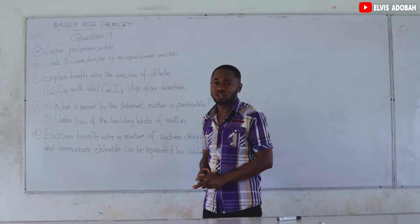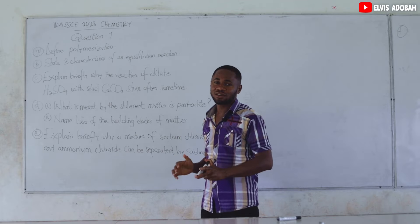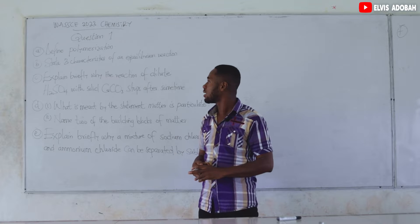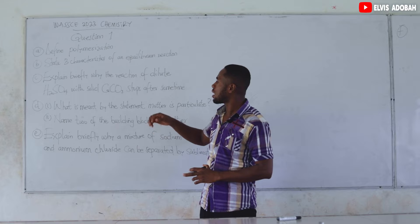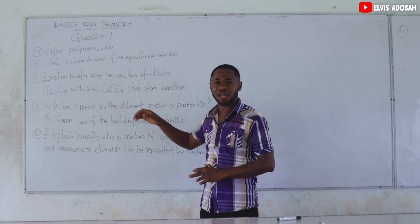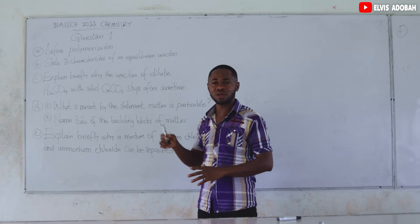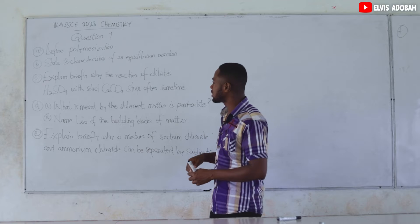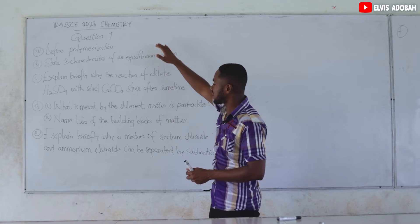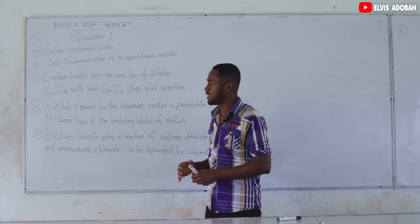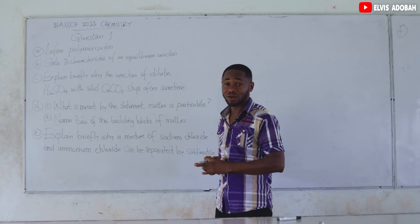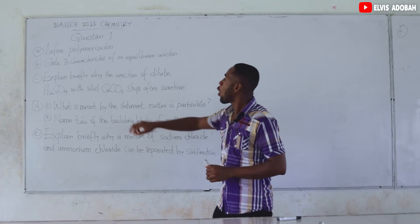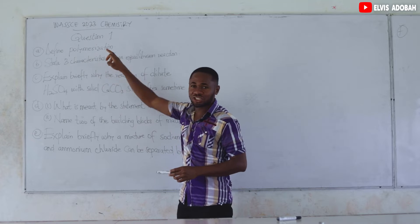Now in elective chemistry WASSCE, question one is a composite question and it normally consists of about nine sub-questions from A to J. In this video I'm going to look at the solutions to questions A to E. Question number one A: define polymerization.